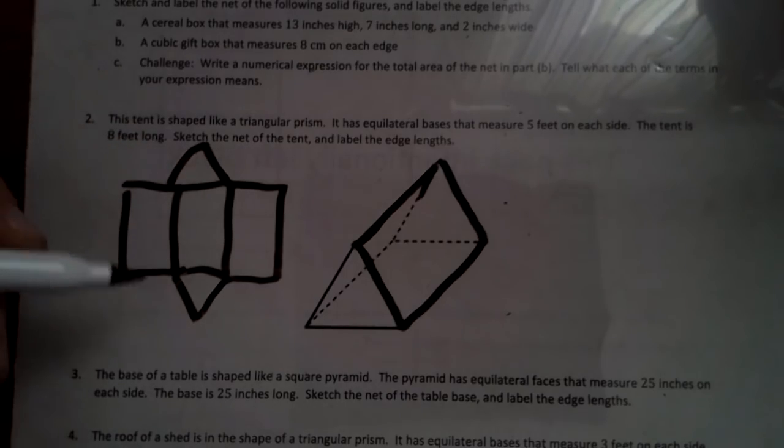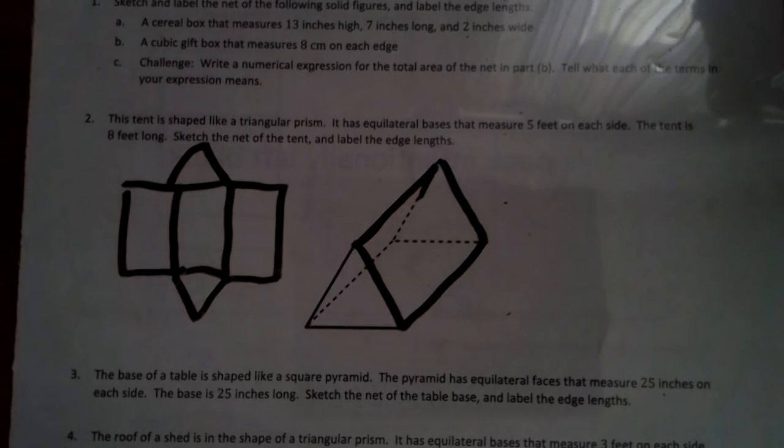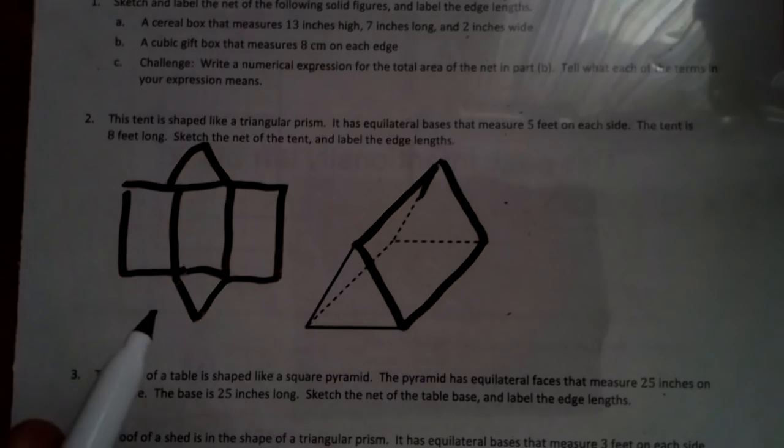So we have something along that line when we're drawing the net. And that's all we're really doing in this lesson is just drawing, taking it from solid and drawing it out. We can label it if they want us to, but right now we're just sketching it.